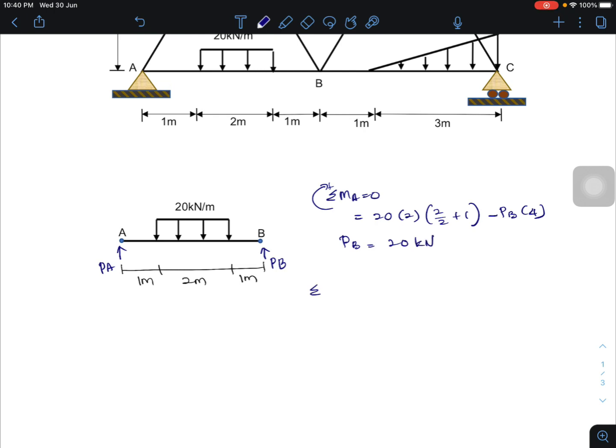And then for vertical equilibrium, PA plus PB minus 20 times 2. So PA equals 20 kN.